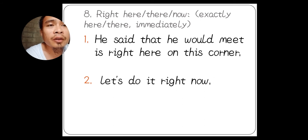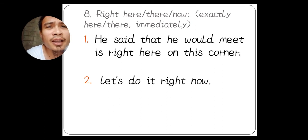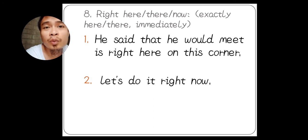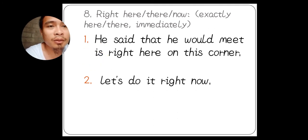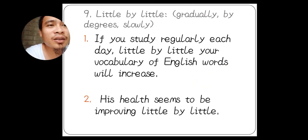Number eight: 'right here,' 'right there,' and 'right now.' These mean exactly here, exactly there, and immediately. For example: 'He said that he would meet me right here on this corner' — meaning exactly here. And 'Let's do it right now' means immediately.